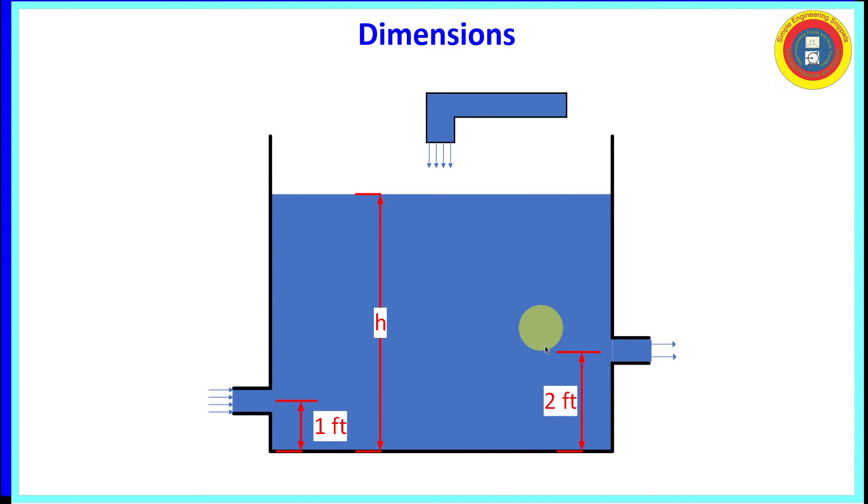Okay, before we get started, let's go over some dimensions. We have an inflow pipe, an outflow pipe, and the elevation from the bottom of the tank are provided. And the diameter of each of these pipes is 4 inches.